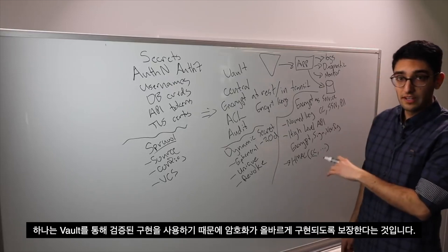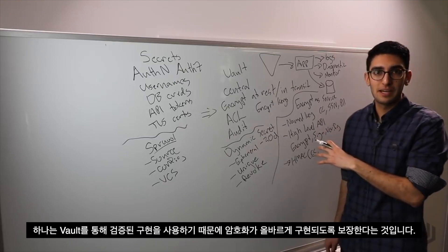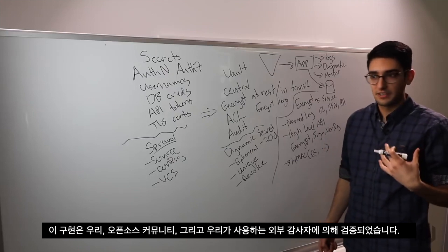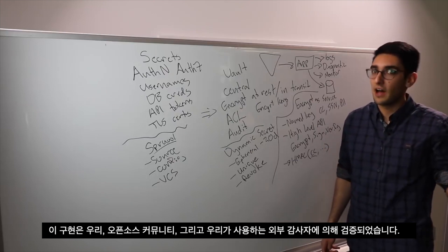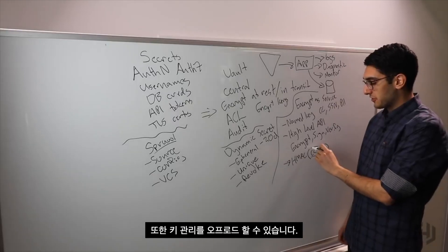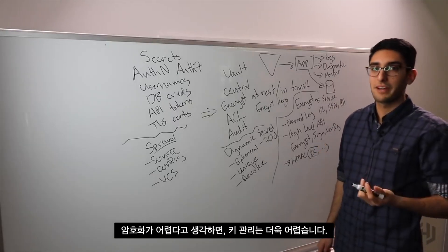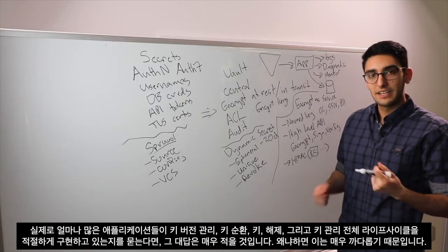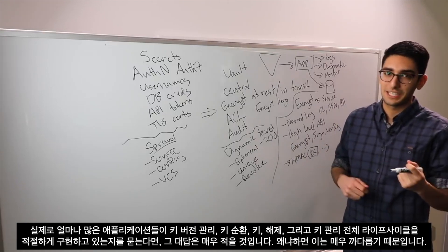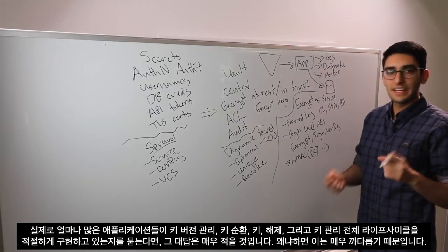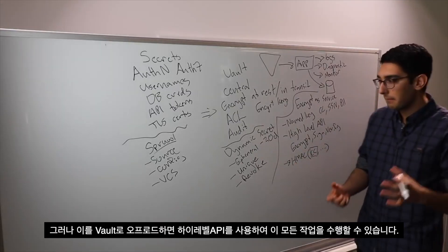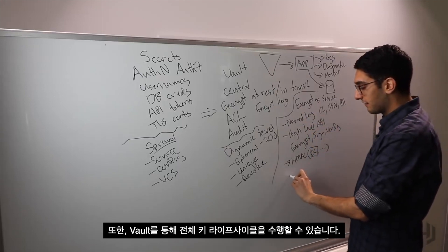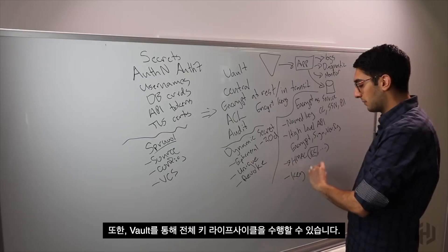This ensures that the cryptography is correctly implemented because we're using a vetted implementation by Vault — vetted by us, by the open source community, and by external auditors. It also lets us offload key management. If cryptography is hard, key management is even harder. In practice, very few applications properly implement key versioning, key rotation, key decommissioning, and the full lifecycle of key management. By offloading this to Vault, we can use high-level APIs to do all of this and get the full key lifecycle provided by Vault.